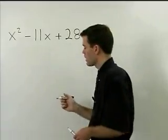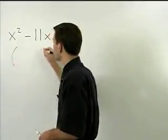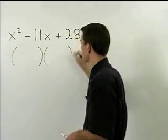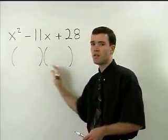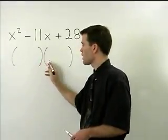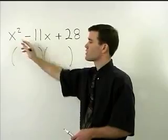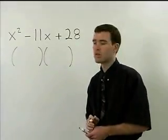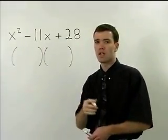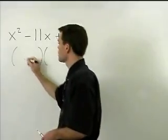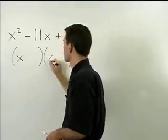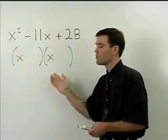The way you do that is by setting up two sets of parentheses that will contain your two binomials. The first term in each binomial will be a factor of x squared. Since x squared factors as x times x, we're going to use an x as the first term in each binomial.